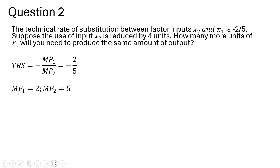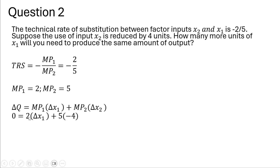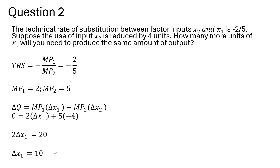Therefore, we can claim that the marginal product of input 1 is 2 and the marginal product of input 2 is 5. Stating the change in output formula and substituting what we know: we're producing the same amount of output, so delta Q is 0. The marginal product of input 1 is 2, and the marginal product of input 2 is 5. Input 2 is being reduced by 4 units. Solving for the change in X1, after dividing through by 2, we get an answer of 10.